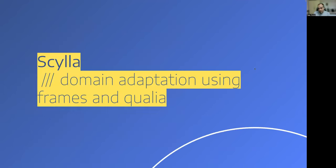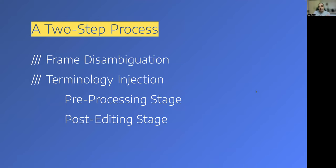After this structured database was created for the sports domain, we developed SILA, a methodology for domain adaptation using frames and qualia. SILA is a two-step process. First, it performs frame disambiguation in the sentences — assigning frames to the ambiguous lexical units in a sentence given the context — and then it performs terminology injection in the machine translated versions of those sentences, either during the pre-processing stage or in the post-editing stage.